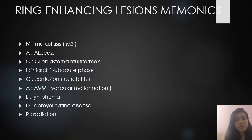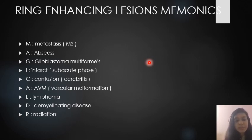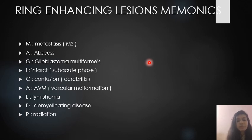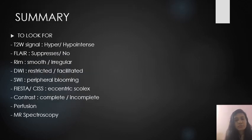The pneumonic for ring enhancing lesions is MAGICAL DR: M — metastasis; A — abscess; G — glioblastoma multiforme; I — infarct in subacute phase; C — contusion; A — vascular malformation (AVM); L — lymphoma; D — demyelinating disease; R — radiation necrosis.